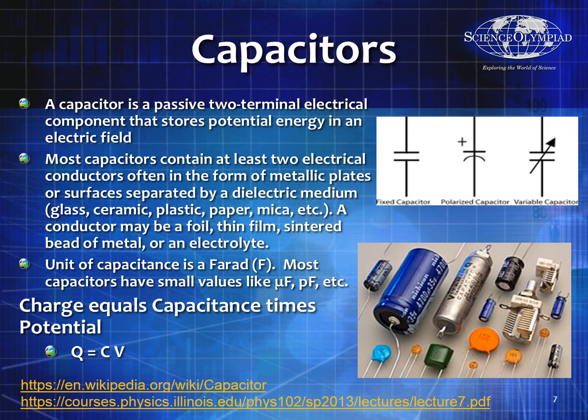Today we're going to talk about capacitors. A capacitor is a passive two-terminal electrical device that stores potential energy in an electric field. The charge builds up on both sides of the capacitor, and once it's fully charged, no current proceeds. The total charge is equal to the capacitance times the voltage.